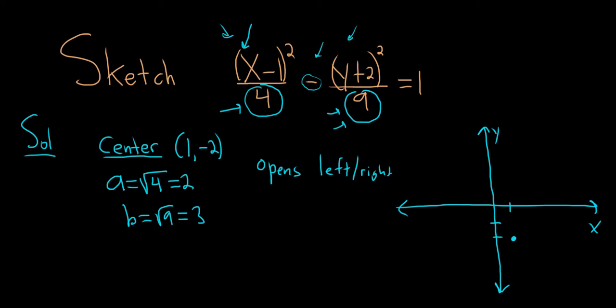And because it opens left and right, you go left and right by a. So 1, 2, put a dot. 1, 2, put a dot. Then you go up and down by b. So 1, 2, 3, put a dot. 1, 2, 3.